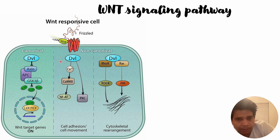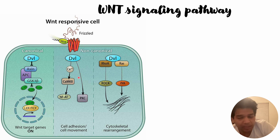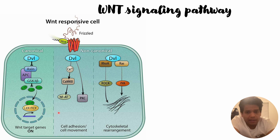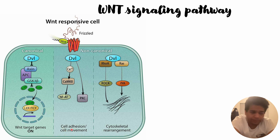Now let us discuss the non-canonical pathway. In this case, when the WNT signaling pathway gets triggered, it might release calcium from within the endoplasmic reticulum of the cells. Because of the release of calcium from the endoplasmic reticulum, it might disrupt the normal homeostasis within the cells.